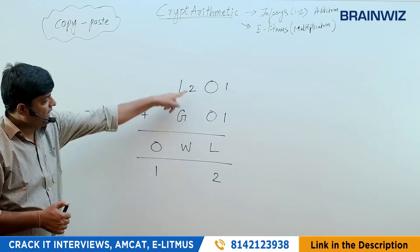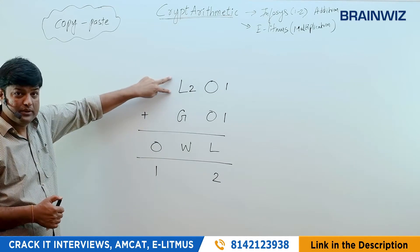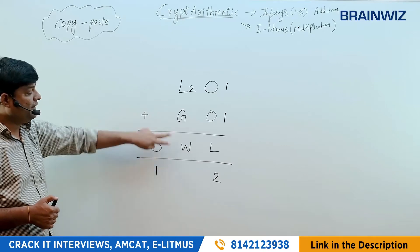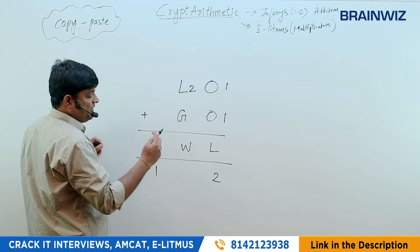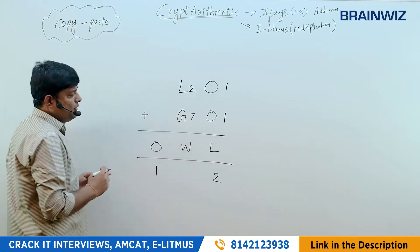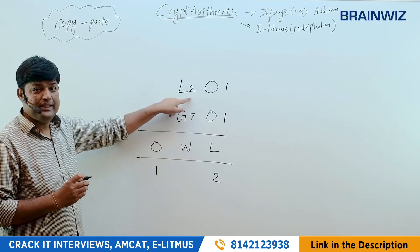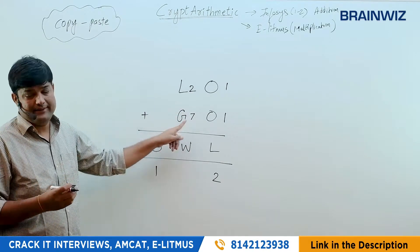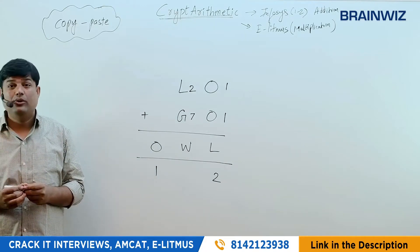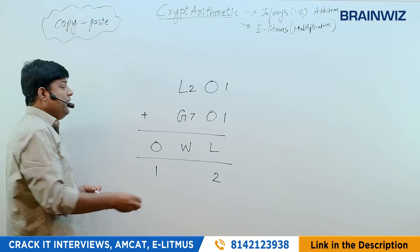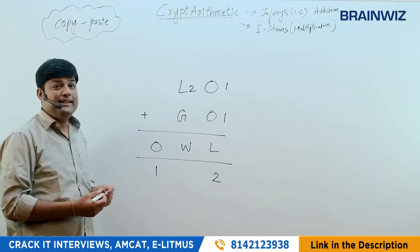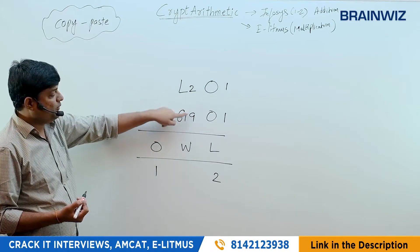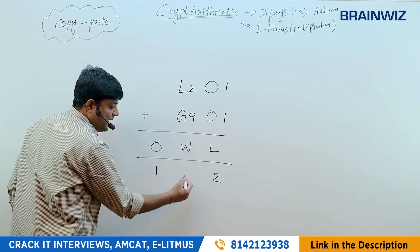Now we need a carry, and L is already 2, so 2 added with G should give W with a carry. If G is 7, then 7+2=9 — no carry. So G must be more than 7. If G is 9, then 9+2=11 — we get a carry of 1, but W would be 1, which conflicts with O already being 1.